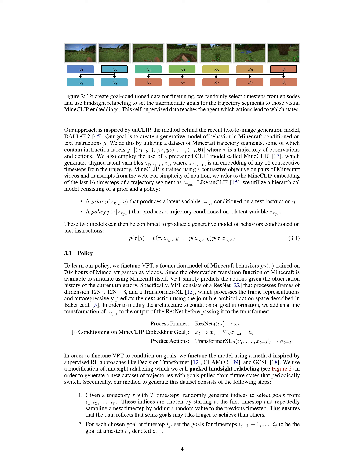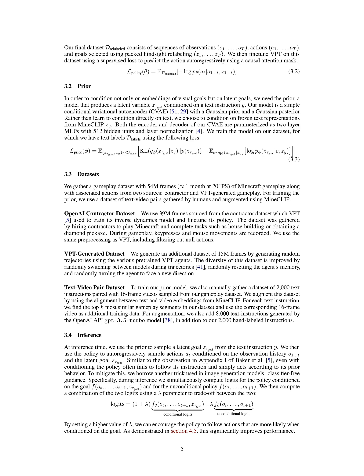To fine-tune VPT to take goals into account, we've used a method inspired by supervised RL approaches. We've created a new dataset of trajectories with goals that change periodically, using a modification of relabeling that we call Packed Relabeling. To generate this dataset, we start with a trajectory and randomly generate indices to select goals from, chosen by starting at the first timestep and repeatedly adding a random value. This reflects the fact that some goals may take longer to achieve than others. For each chosen goal at a certain timestep, we set the goals for the following timesteps to be the same as the chosen goal.